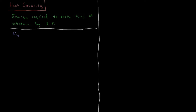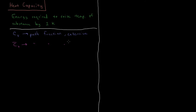There are two kinds of heat capacities that we are interested in. We have CV, the constant volume heat capacity, which is a path function — it depends on how you get a process from state A to state B — and it is also an extensive property. If you divide by the number of moles you get the molar constant volume heat capacity, which is an intensive property. It is the energy required to raise one mole of a substance by 1 kelvin.